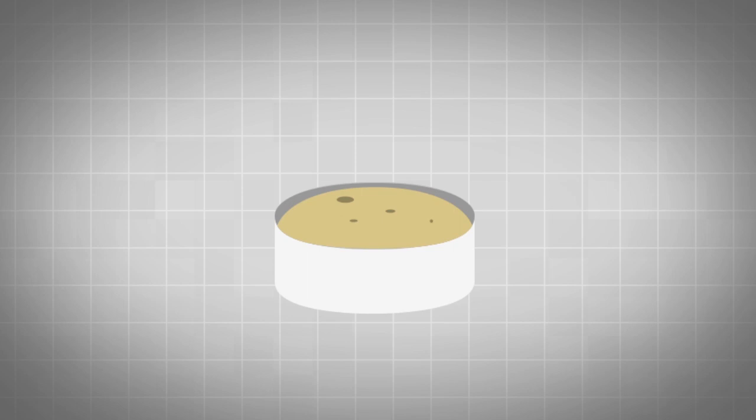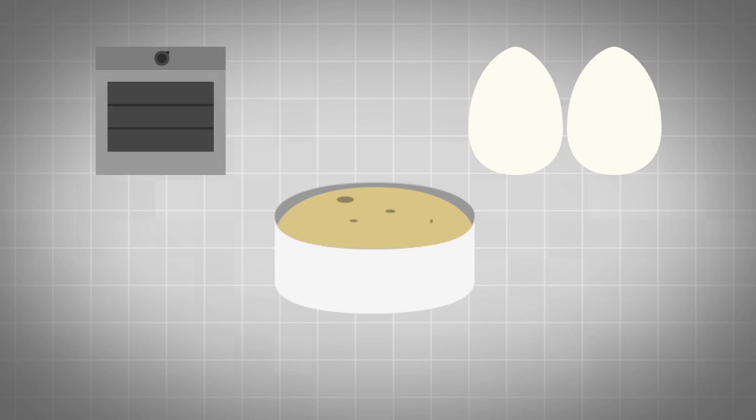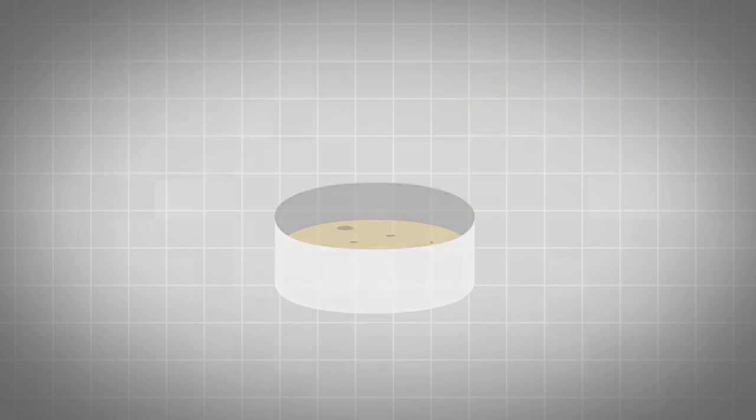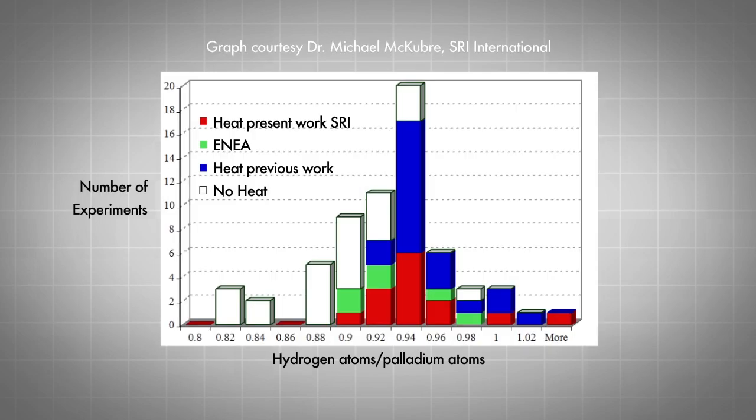It's like making a souffle. If you forget to put the egg whites in the souffle, even if you set the right temperature and do everything else correctly, you get no souffle. But when the right conditions are achieved, the reaction always turns on.